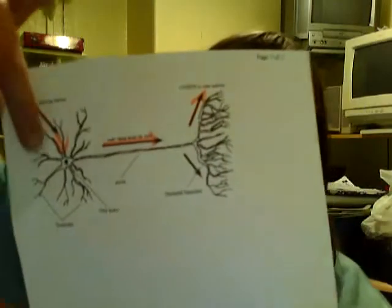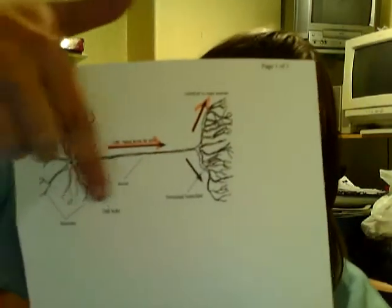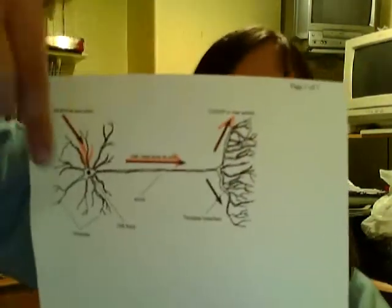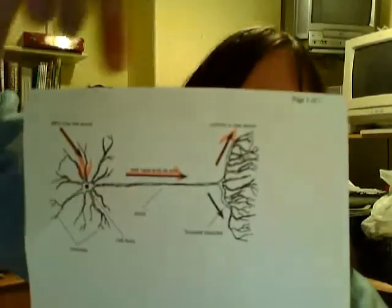It will continue to do it this way — the message comes in, goes along the axon, and continues upward through the other nerve cells until it meets its target cell.